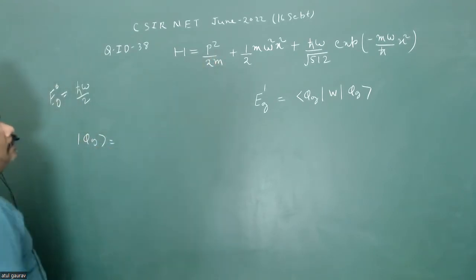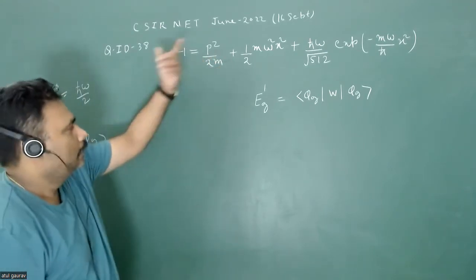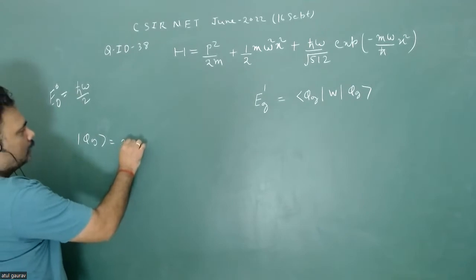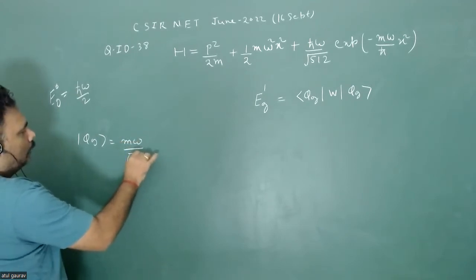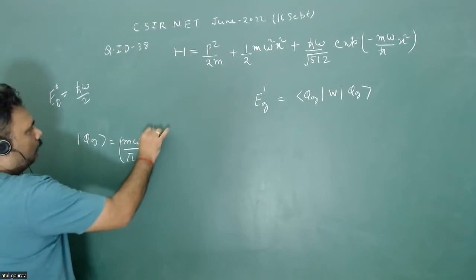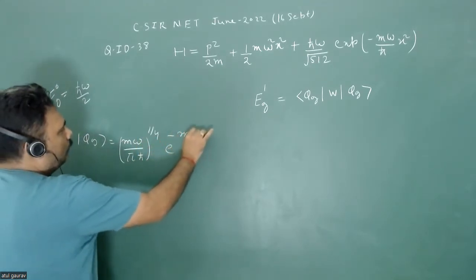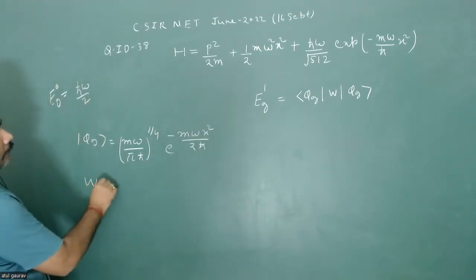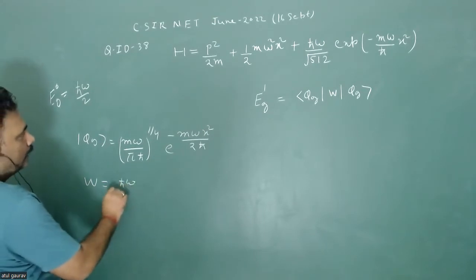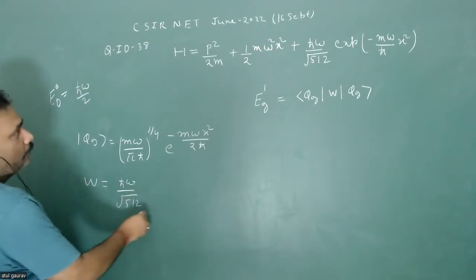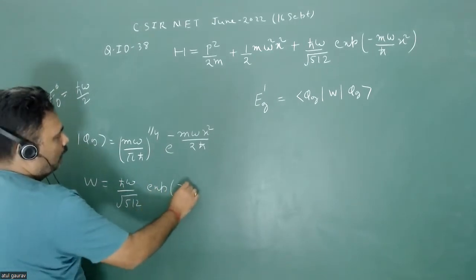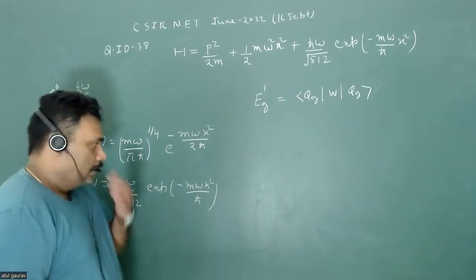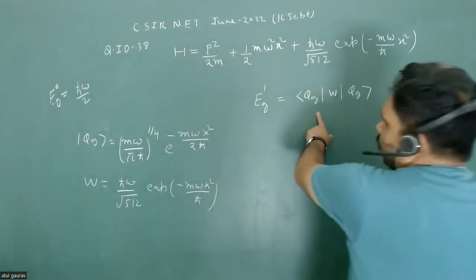We use the normalized eigenfunction of the original harmonic oscillator Hamiltonian. The ground state wave function is φ_ground = (m omega / π h-bar)^(1/4) times e^(−m omega x² / 2h-bar). The perturbation W is h-bar omega over root 512 times exponential of −m omega x² / h-bar.